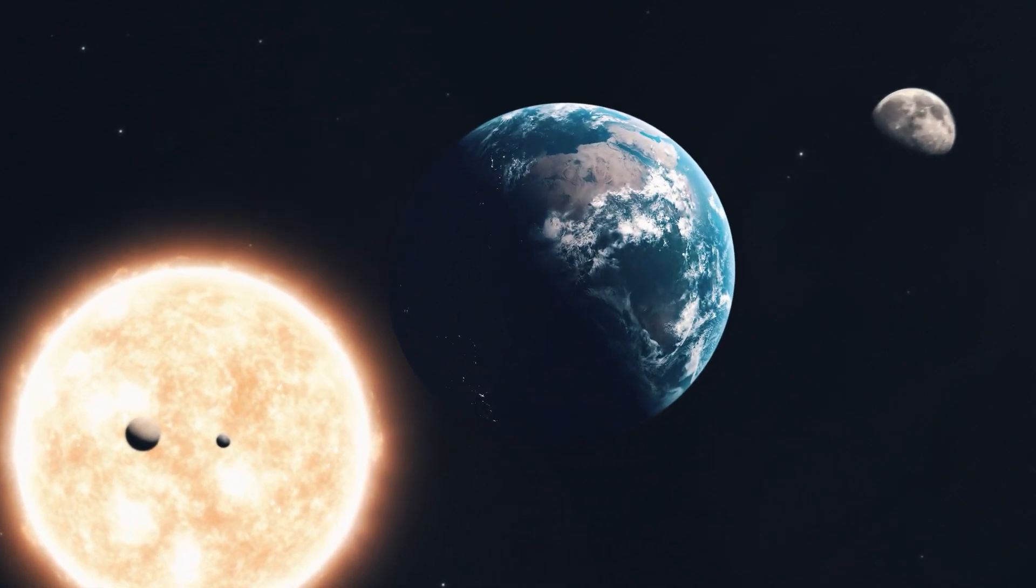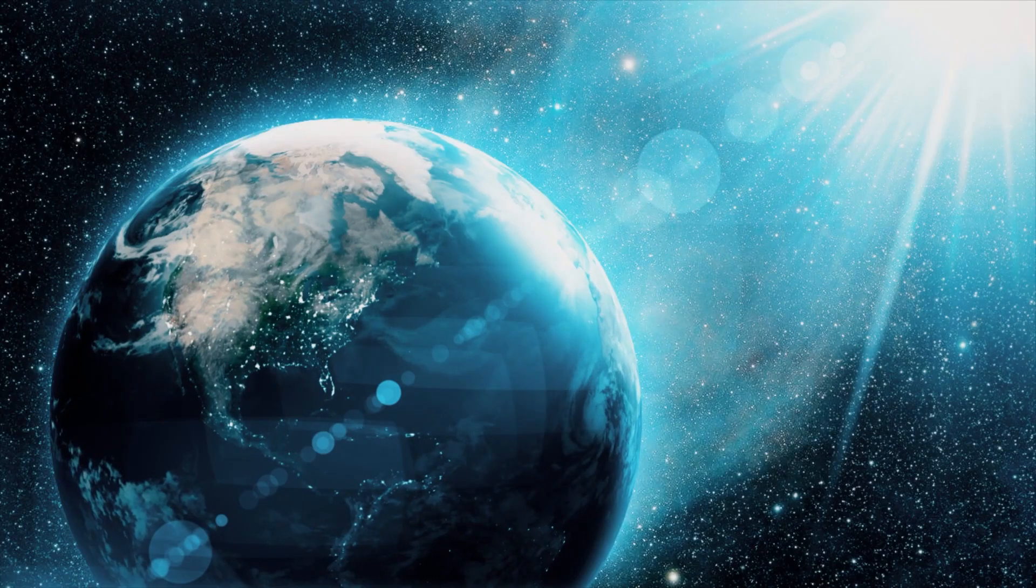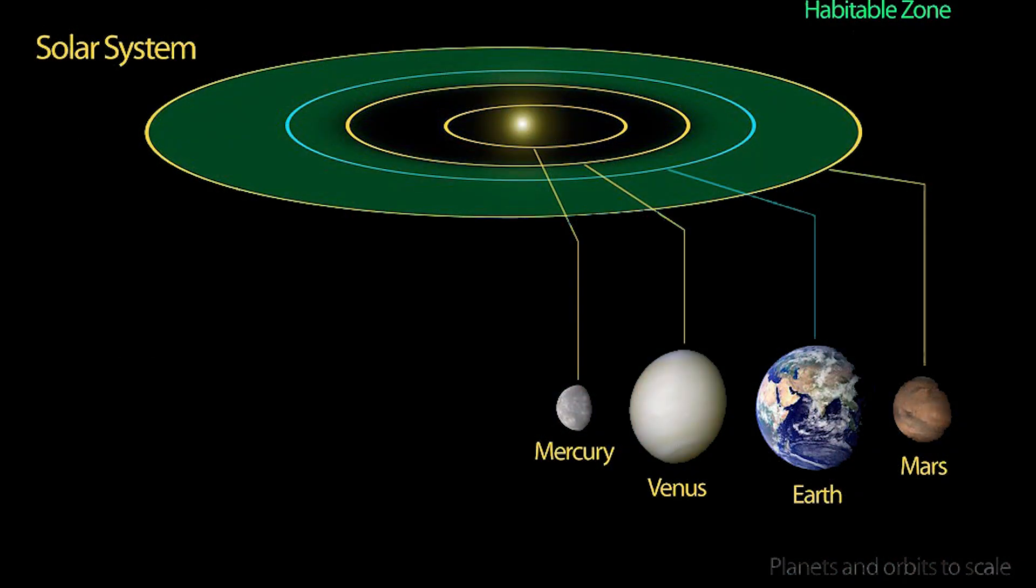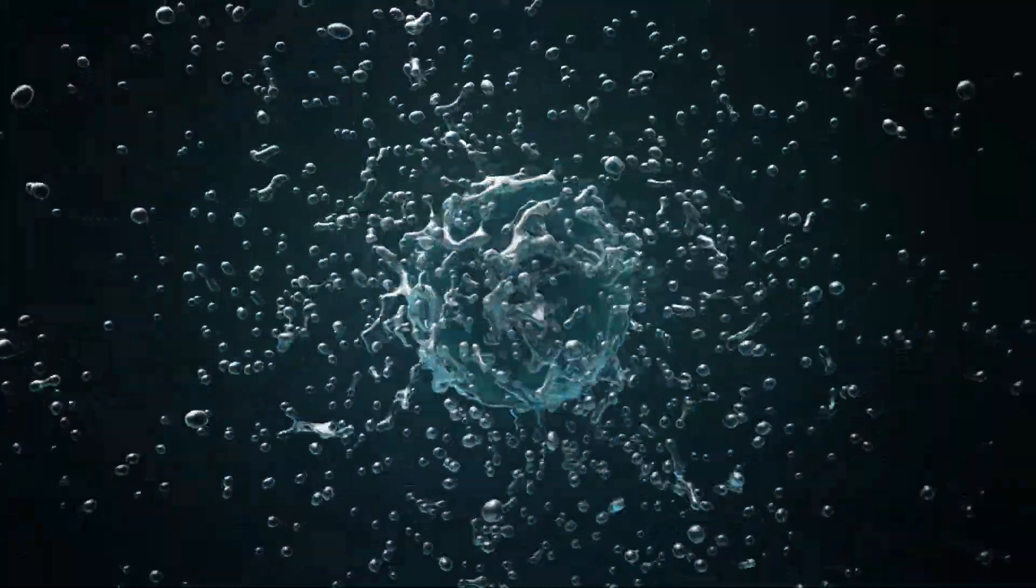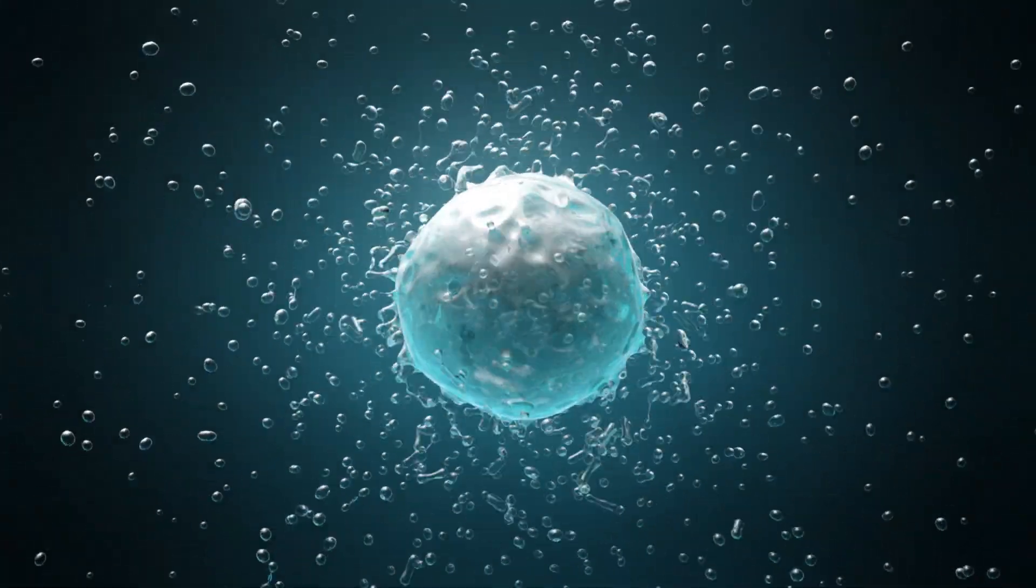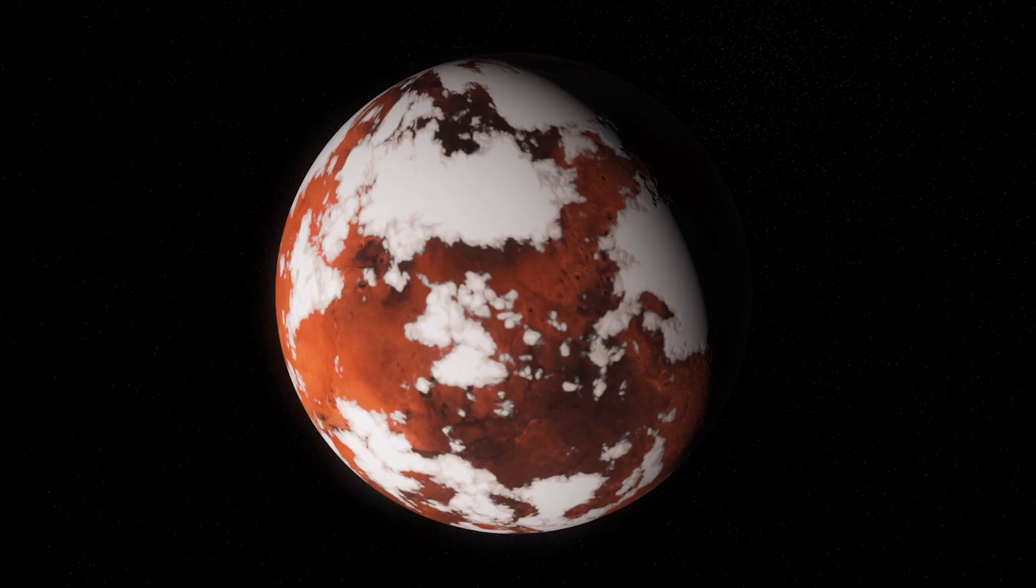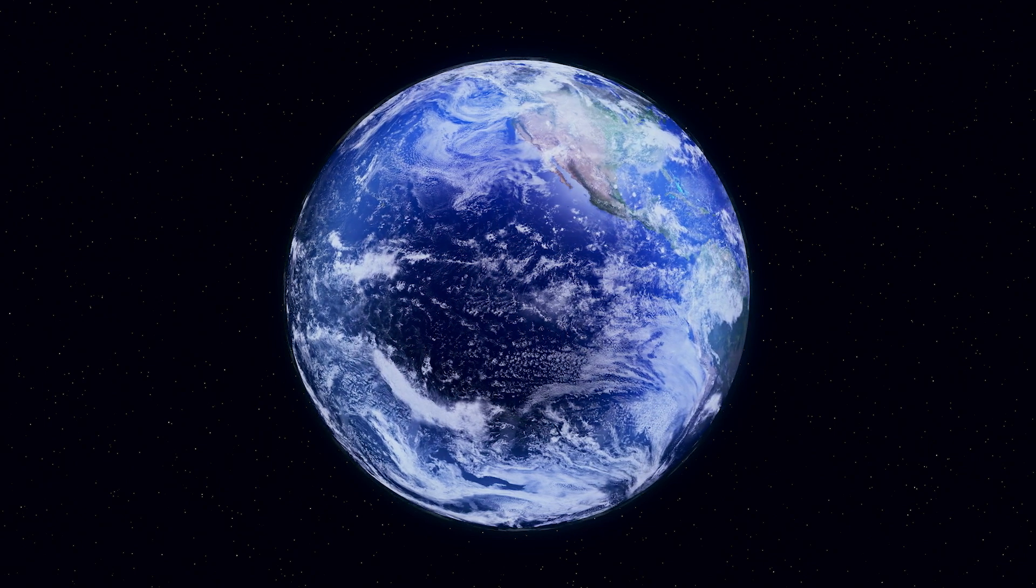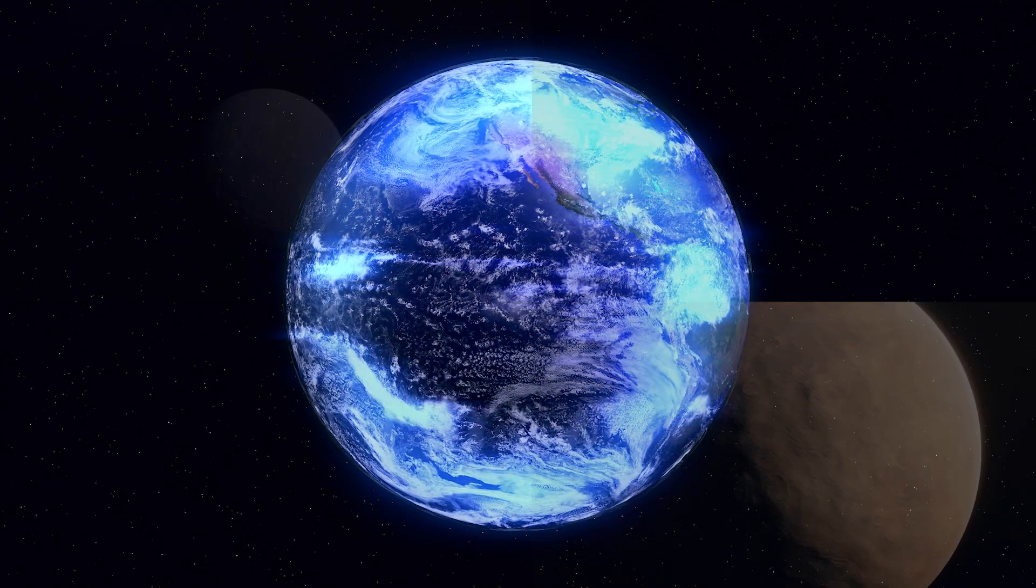Earth exists in an orbital region known as the habitable zone, also known as the Goldilocks zone. This is the region where a planet is far enough from the sun to contain liquid water if the right elements are present. Not too hot, not too cold—the temperature is just right in the Goldilocks zone.